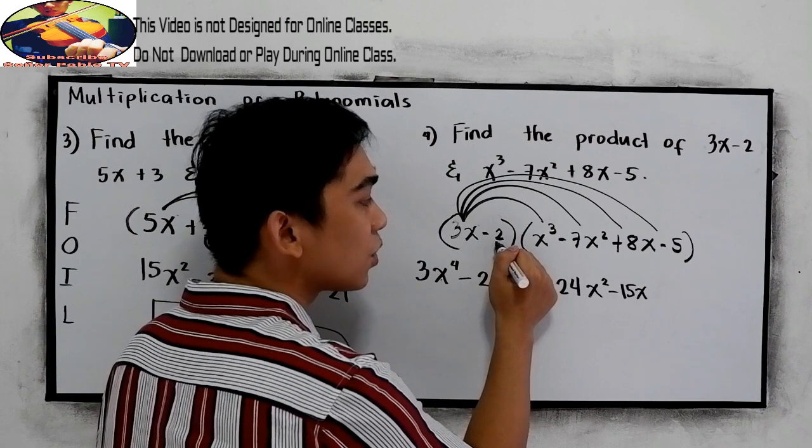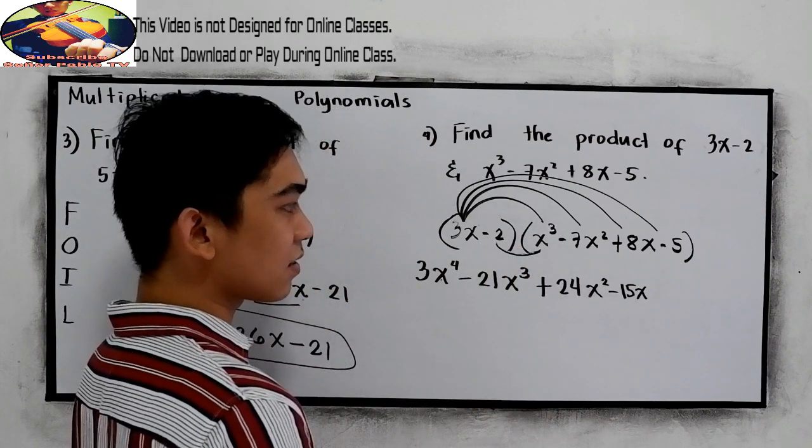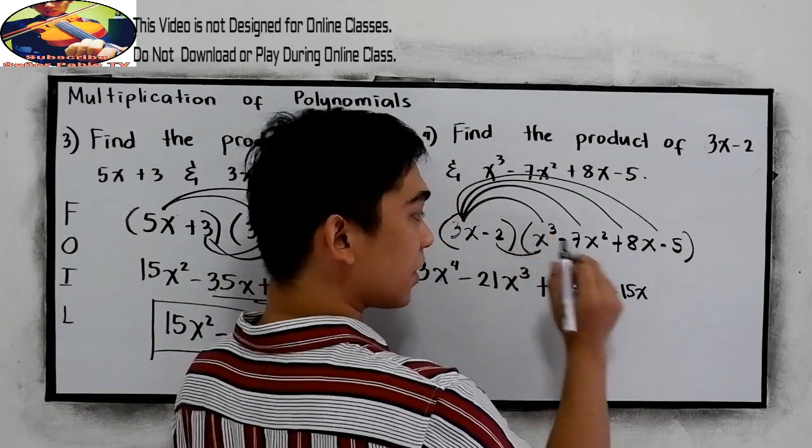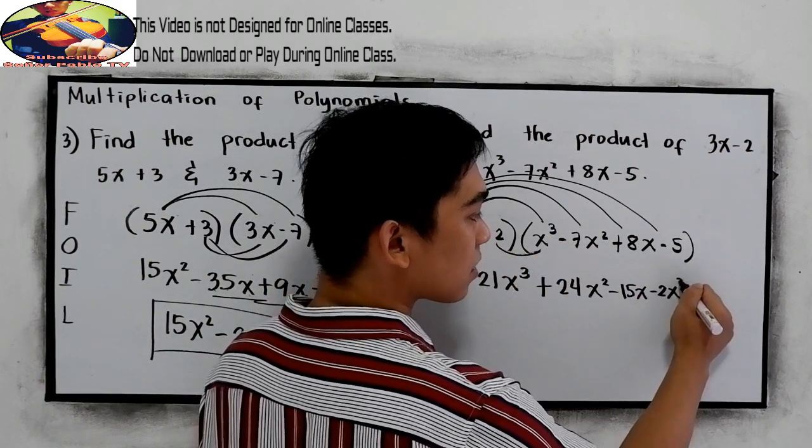So negative 2 times x cubed. Negative 2 times x cubed. So negative 2x cubed.